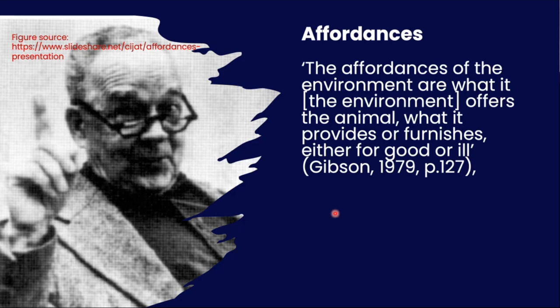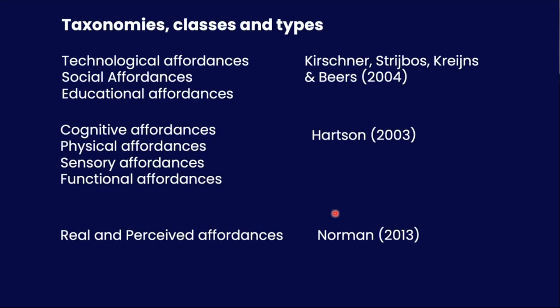Gibson was the first person to coin the term affordances. By affordances, it means the action possibilities that the environment offers to the organism, and it can be either for good purpose or ill purpose. Different scholars have classified affordances in different ways. For example, Korsner et al., while proposing a design framework for collaborative learning, proposed technological affordances, social affordances, and educational affordances. Technological affordances are the technological attributes which create opportunities for users to carry out actions in an efficient way. Social affordances are the action possibilities of technologies which promote social interaction. Educational affordances are when a web tool helps users carry out tasks in a collaborative way in a teaching and learning situation.